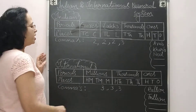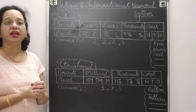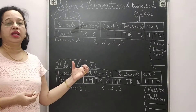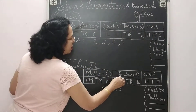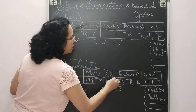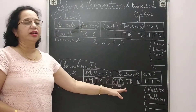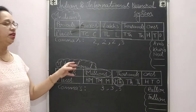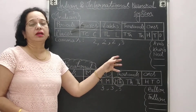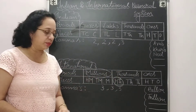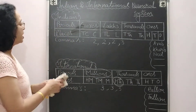The important keyword for the international number system is million. If you see the word million, it is international. Another indicator is hundred thousand, which is also considered part of the international number system depending on the given numbers.